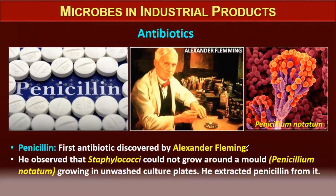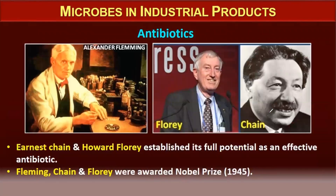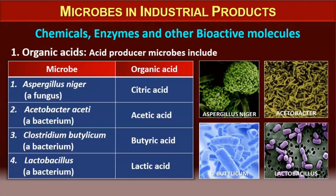Penicillin was the first antibiotic, discovered by Sir Alexander Fleming. He observed that Staphylococci could not grow around the mold — Penicillium notatum — that was growing in unwashed culture plates. He extracted penicillin from it. Ernest Chain and Howard Florey then established its full potential as an effective antibiotic, and Fleming, Chain, and Florey were awarded the Nobel Prize in 1945 for the discovery of antibiotics.